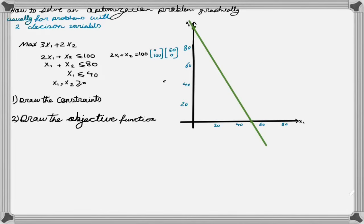To check what side of this line we are looking at in this inequality, one way is to pick an arbitrary point which is not on the line and see if it satisfies the inequality or not. If it does, we are looking at the side that includes that point; otherwise we are looking at the opposite side. By standard, we usually select the point (0, 0) if it's not on the line. In this example, if I select point (0, 0) and put it in the first constraint, 0 is less than 100, so the constraint is satisfied. So we are looking at the side that includes point (0, 0). We can show this conclusion with an arrow on the line.